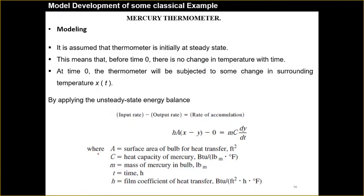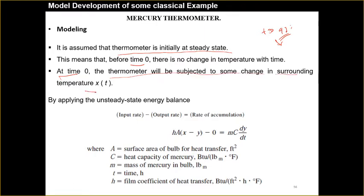In the ideal condition we do not assume these expansion effects. Now for the modeling: it is assumed that initially the thermometer was at steady state — say at 97 degrees Celsius before time zero. At time t equal to zero, the thermometer is subjected to some change in the surrounding temperature x(t). We write the energy balance: in-rate minus out-rate equals rate of accumulation.